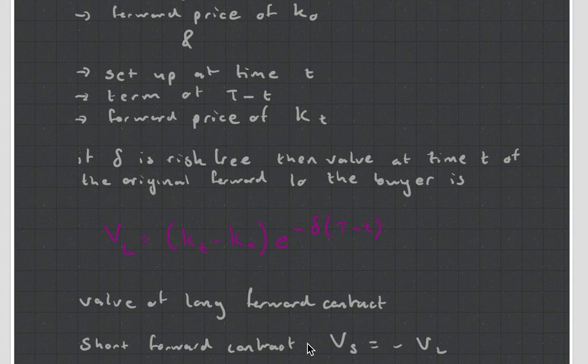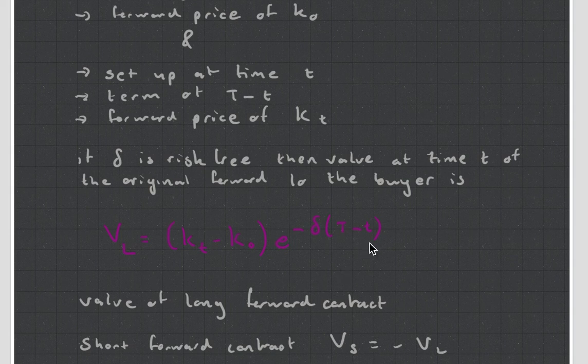And if it's a short forward contract, that means you're the guy doing the opposite thing. Then it's just the negative of that. So, what you might do with these questions is you'll have to calculate K0, you're going to have to calculate Kt, and then you can use this formula to calculate what the difference is going to be.